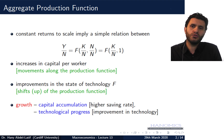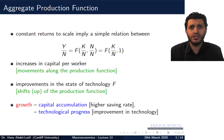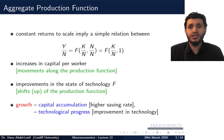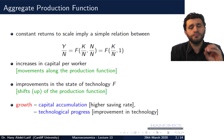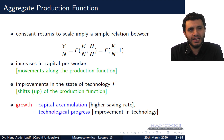So Y over N equals f, which is a function that depends on the state of technology — which we take as given for now, assuming technology is constant. Dividing the right-hand side by N gives us capital per worker: K over N. Technology is assumed not to change for now, and at the end of the lecture we'll see what happens when that changes.